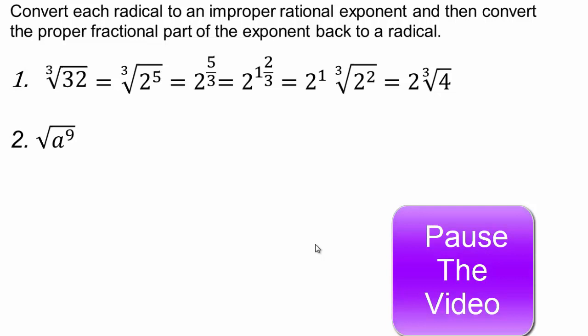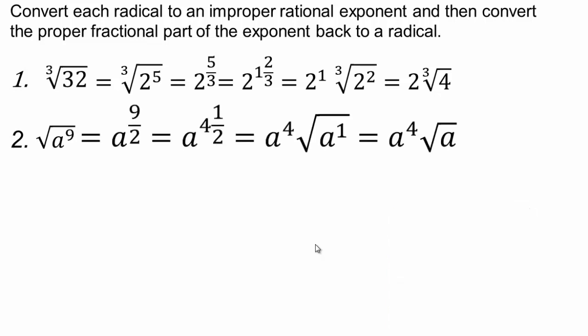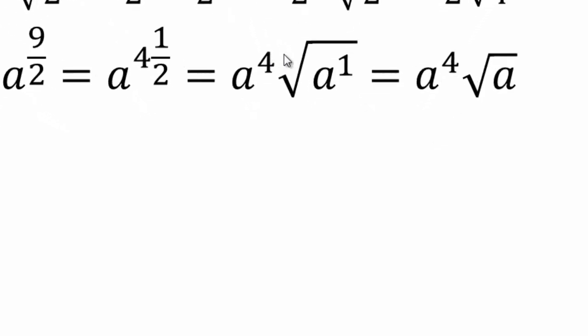Assuming you've paused and come back. So that would be a to the nine halves. Nine halves is four and a half. So a to the four, and square root a, because one half power means that. So again, the fours match up, ones match up, and the twos there, but when it's a square root, we don't write that two. So that's why it looks like that. Alright, let's see if you can do the next one.